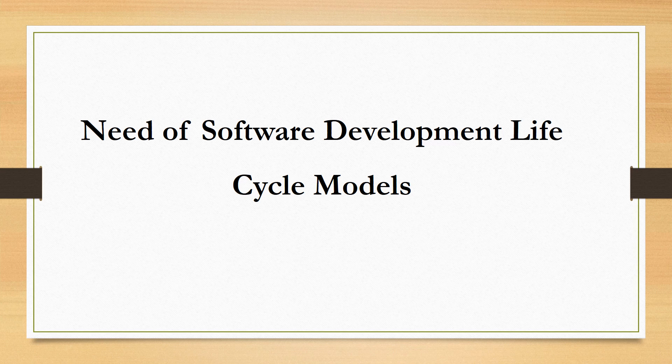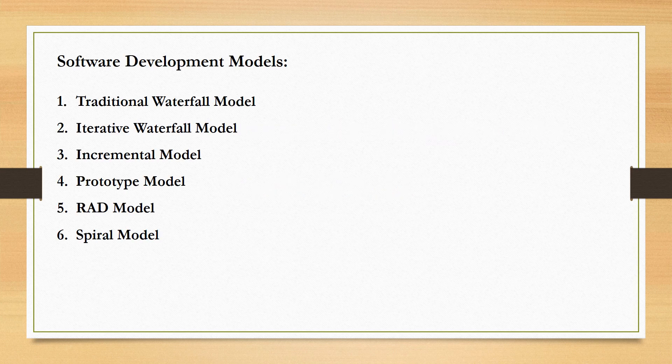Using these models, we can plan things in advance — for example, we can decide what time or cost will be required, what size the software could be, and the number of people required. Along with planning, we can also monitor and control things if they are not going according to plan. There are many software development models: traditional waterfall model, iterative waterfall model, incremental model, prototype model, RAD model, and spiral model. Today I will explain the traditional waterfall model.